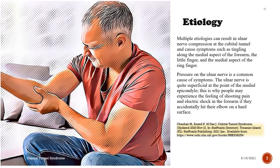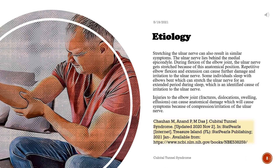Etiology. Multiple etiologies can result in ulnar nerve compression at the cubital tunnel, causing symptoms such as tingling along the medial aspect of the forearm, the little finger, and the medial aspect of the ring finger. Pressure on the ulnar nerve is a common cause; the ulnar nerve is quite superficial at the medial epicondyle, which is why accidentally hitting the elbow on a hard surface can cause shooting pain and electric shock in the forearm. Stretching the ulnar nerve can also result in similar symptoms, as the ulnar nerve lies behind the medial epicondyle and gets stretched during elbow flexion.